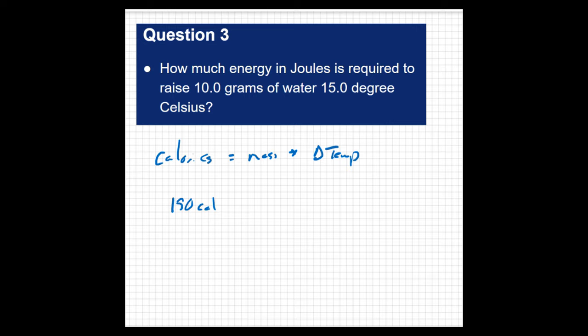But this question is asking for the answer in joules. So we just learned that one little calorie equals 4.184 joules. So we can treat this just like a regular conversion. I can take this statement here and say one calorie for every 4.184 joules, or 4.184 joules for every one calorie.